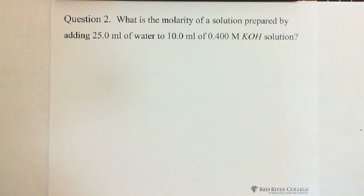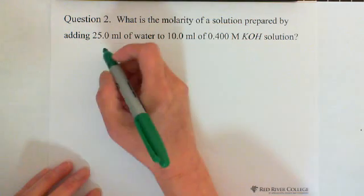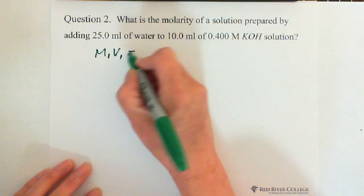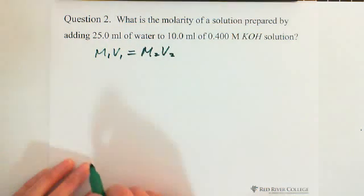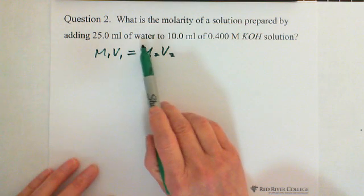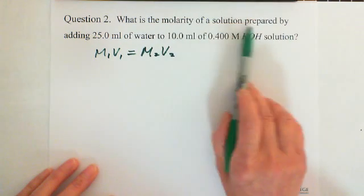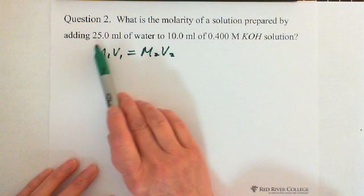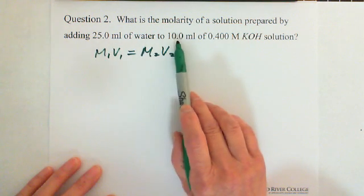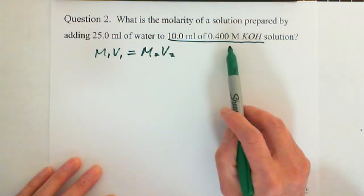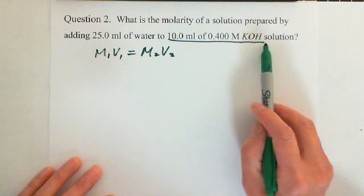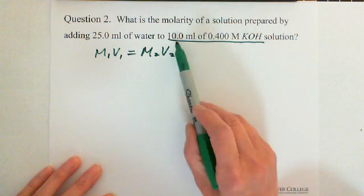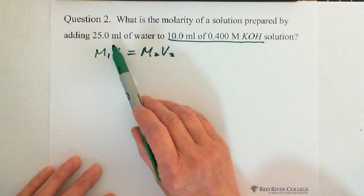Question 2: What is the molarity of a solution prepared by adding 25 milliliters of water to 10 milliliters of 0.400 molarity potassium hydroxide solution? First, write down the formula: M1V1 equals M2V2. Then identify the variables. The 10 milliliters of 0.400 molarity potassium hydroxide is the stock solution — after adding water, the concentration gets lower.